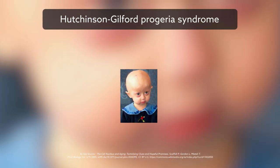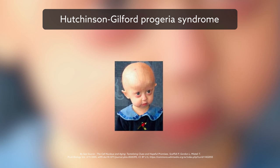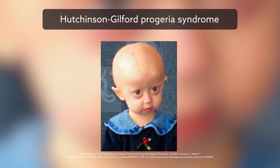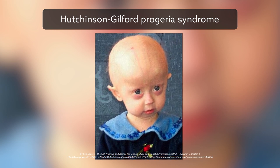Hutchinson-Gilford progeria syndrome is a genetic disorder that causes premature aging, affecting 1 in 8 million newborns worldwide. The disorder is extremely rare and fatal.